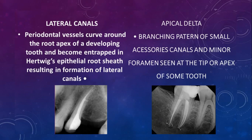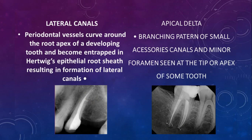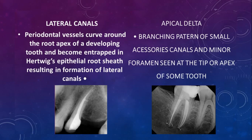Two important canals are the lateral canal and the apical delta. A lateral canal originates at a right angle from the main root canal. The apical delta is a branching pattern of small accessory canals seen at the tip or apex of some teeth. This apical delta can be critical to obturate because bacterial byproducts in this region affect the success rate of root canal treatment.